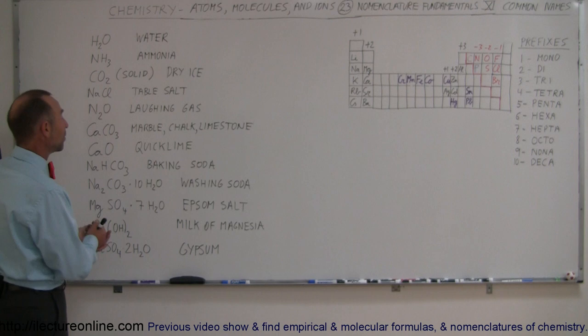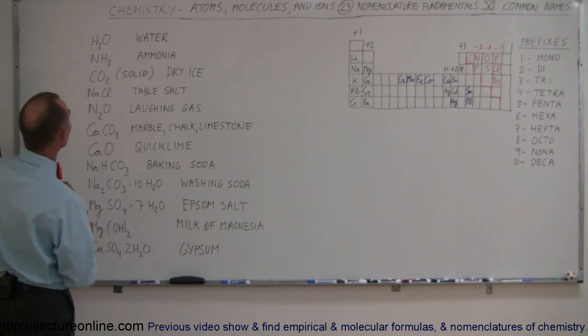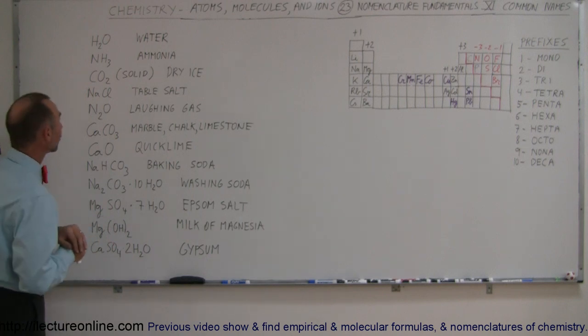And so when you see an H2O molecule you think of it as a water molecule, you don't think of it as a dihydrogen oxide molecule, although you could call it that. So some other common names for NH3 is ammonia.